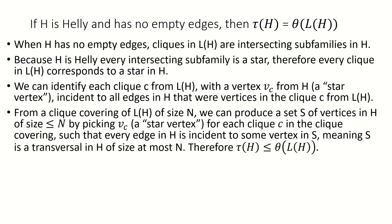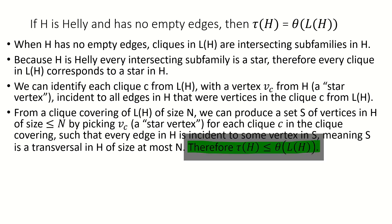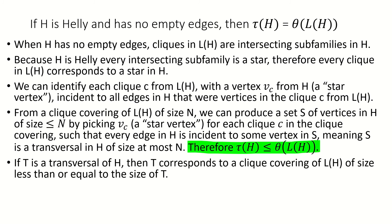Now all this shows is that the transversal number is at most equal to the clique-covering number of the line graph. Why are they exactly equal? Because for any transversal, we can build a clique covering of the line graph with at most as many cliques as there are vertices in the transversal.